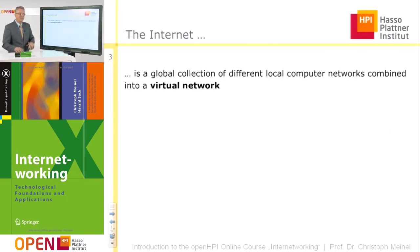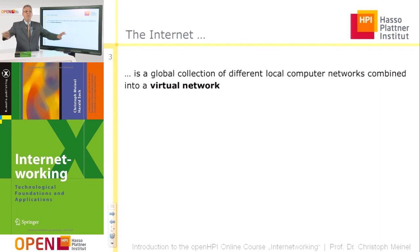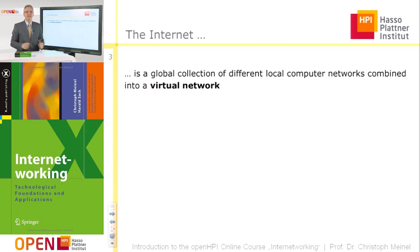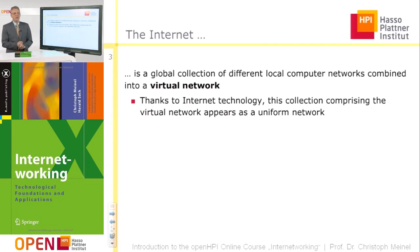The internet is a global collection of very different local computer networks. These local computer networks may be incompatible — it's possible that you cannot interconnect them. So the idea of the internet is to provide, in a layer above, a software solution that helps the different local networks behave like a uniform virtual network. Internet technology is exactly the secret behind this, and this is exactly the topic we want to discuss and learn in this course.